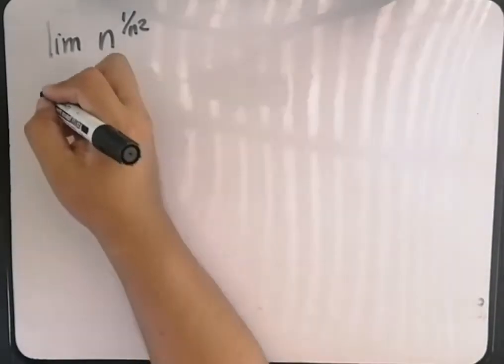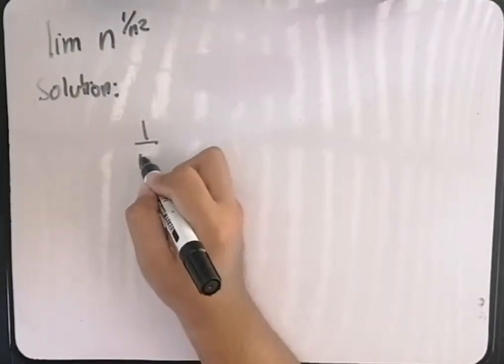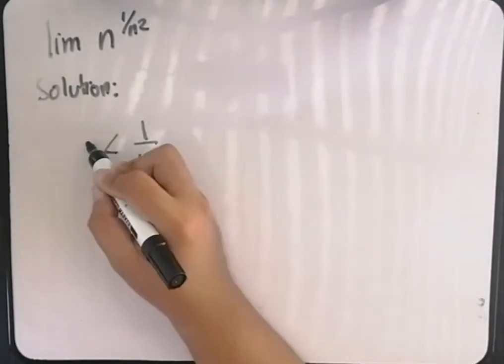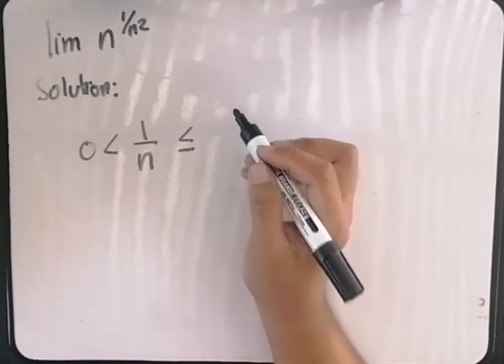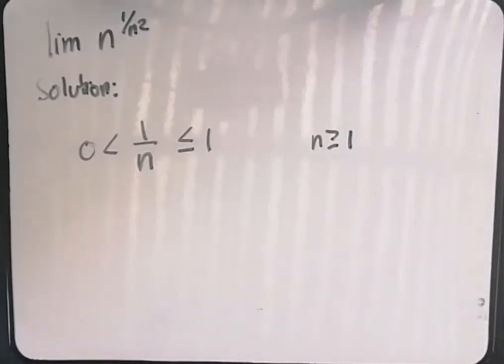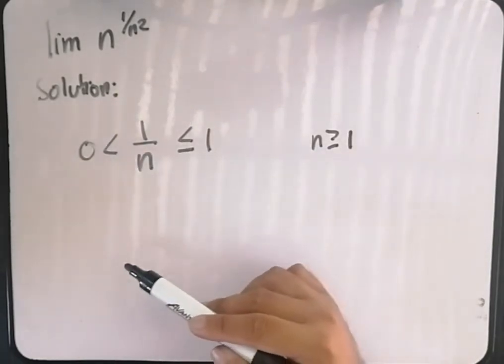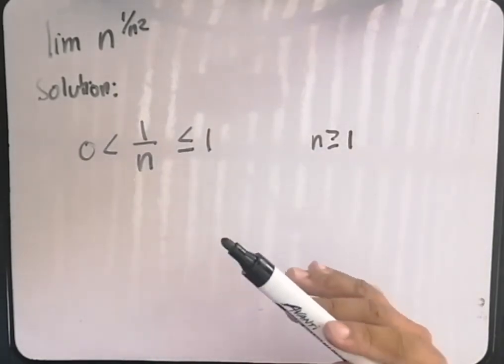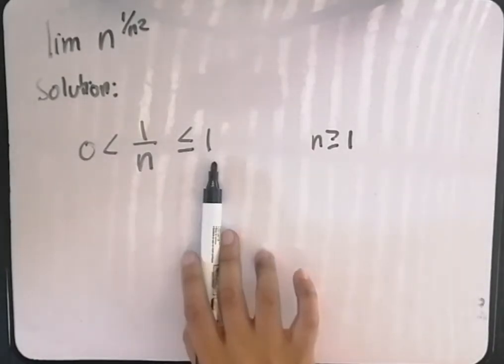So we know that 1 over n is greater than 0 but less than or equal to 1 for all n greater than or equal to 1. Pag-check nyo yung graph nito, makikita ninyo na magsisimula siya sa 0 hanggang sa 1. So wala lang ibang values. So this is bounded by 0 and 1.